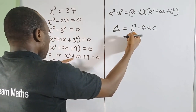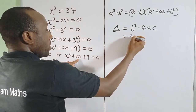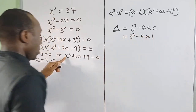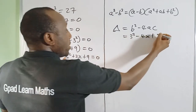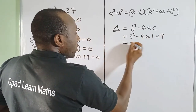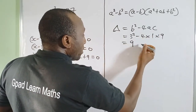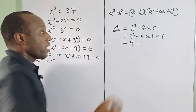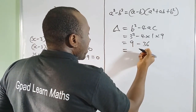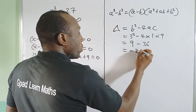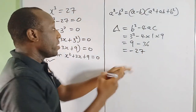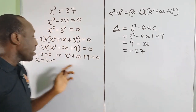Here, b = 3, a = 1, and c = 9. So the discriminant is 3² − 4(1)(9) = 9 − 36 = −27. Because it is less than zero, we have imaginary roots.